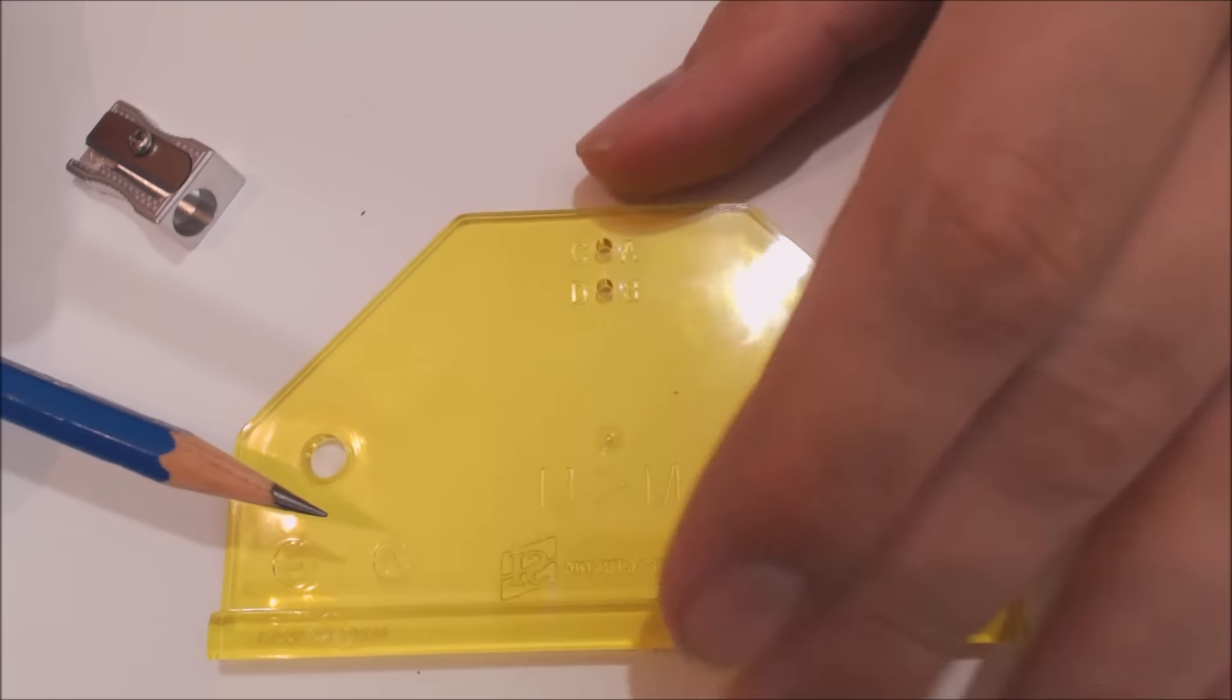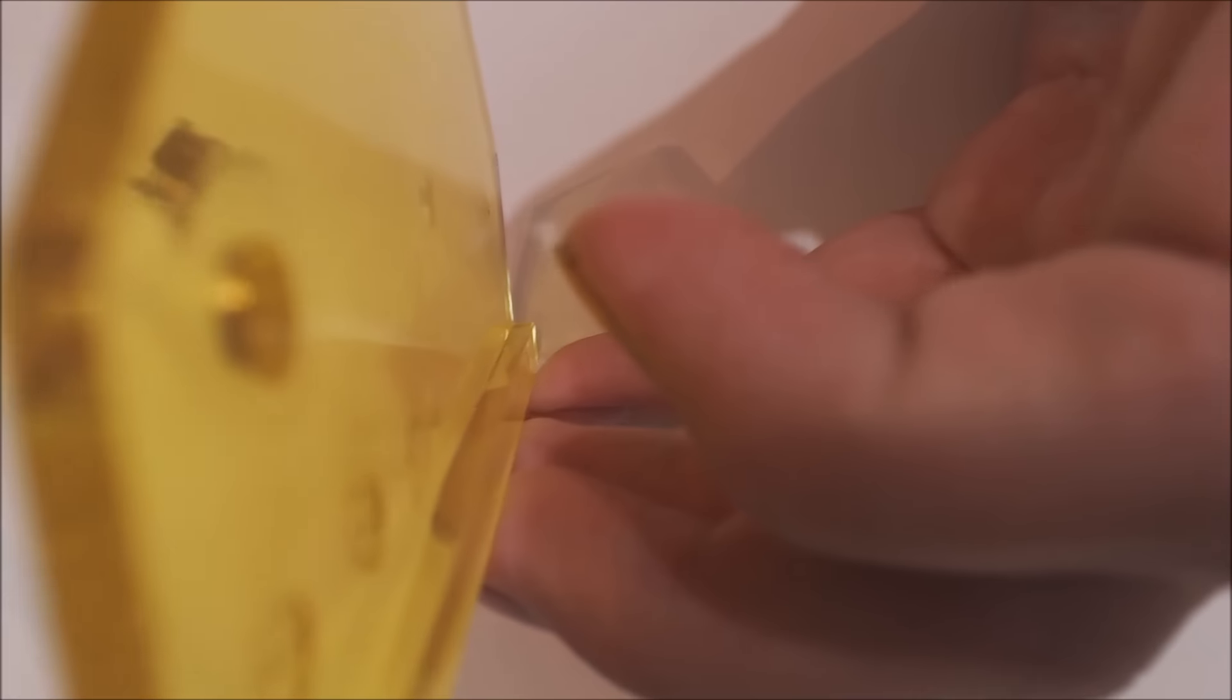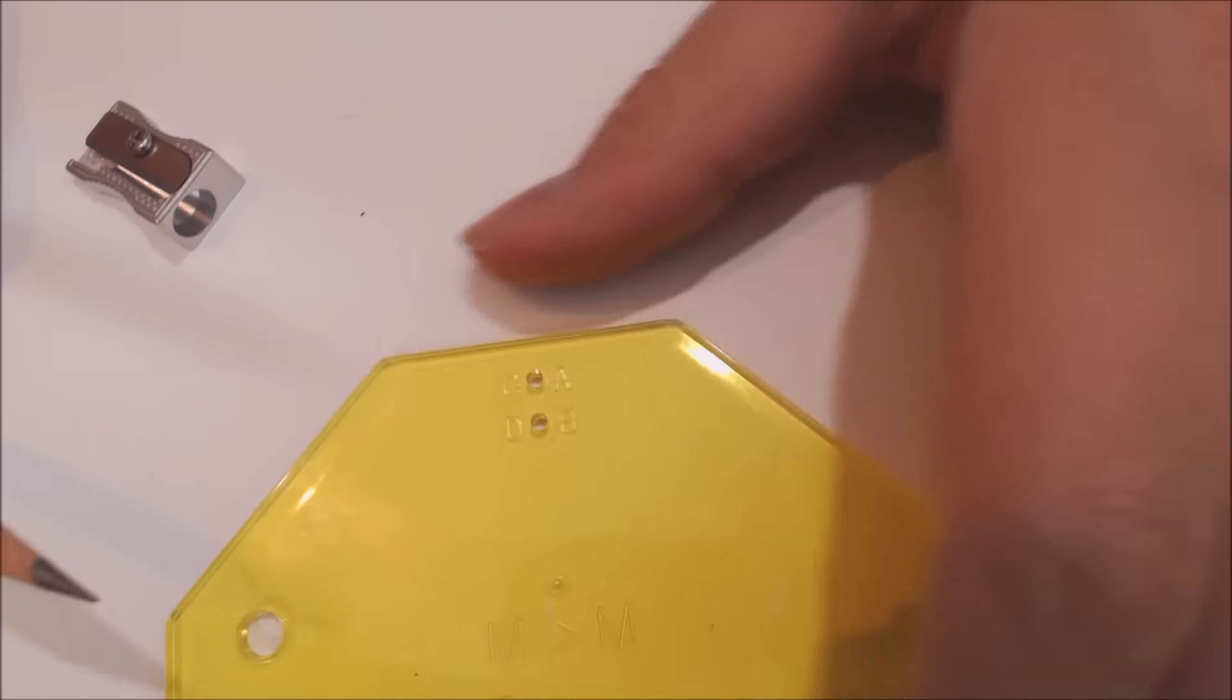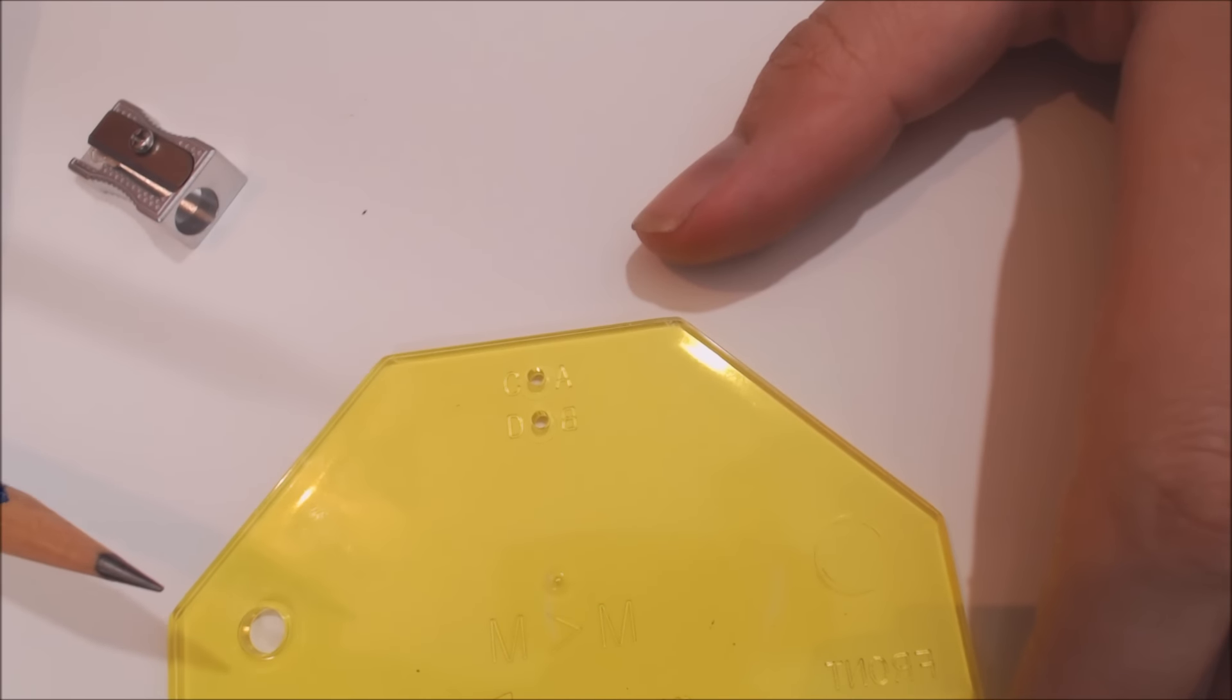Towards the bottom of the tool you'll notice there's a ledge right here. If we look at the side profile you can see the ledge there. We use this ledge along with holes A and B to create our first set of lines. Let's do that now.